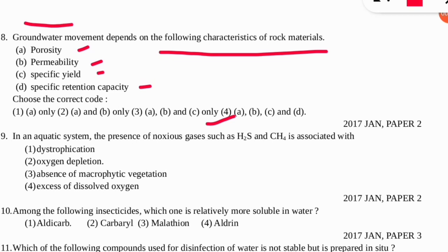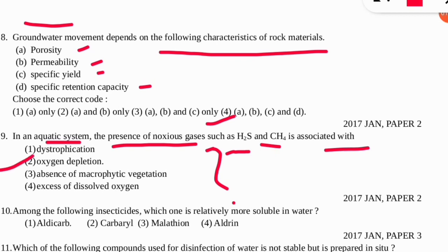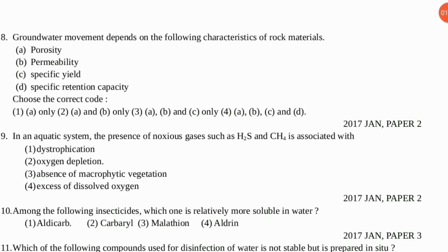The ninth question: in an aquatic system, the presence of noxious gases such as H₂S (hydrogen sulfide) and methane is associated with which of the following reasons? The correct option is B — oxygen depletion. When oxygen is depleted, anaerobic bacteria grow as algal growth happens, leading to the formation of noxious gases methane and hydrogen sulfide.